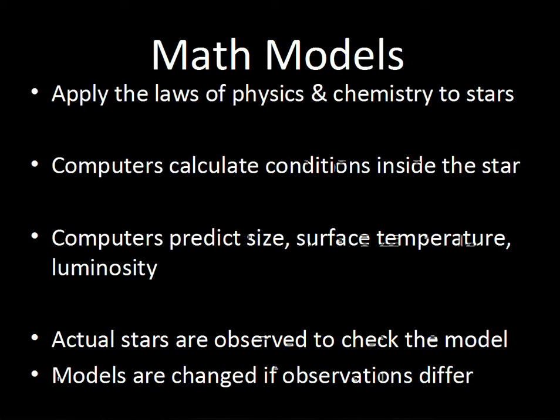These computer models can give the size of the star, the surface temperature, and the luminosity if you feed in mass and composition as input to the program, along with the rotation rate. The computer can then calculate what conditions are inside the star and what conditions exist at the observable surface — the photosphere.